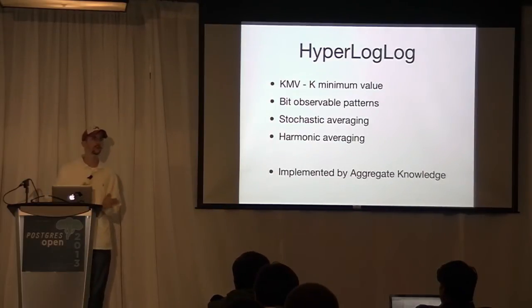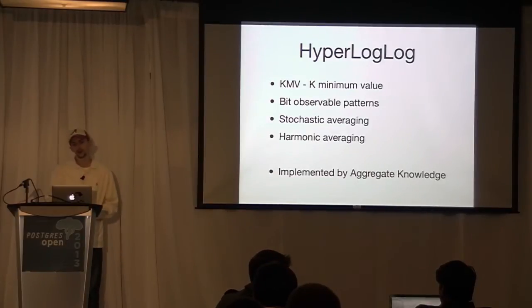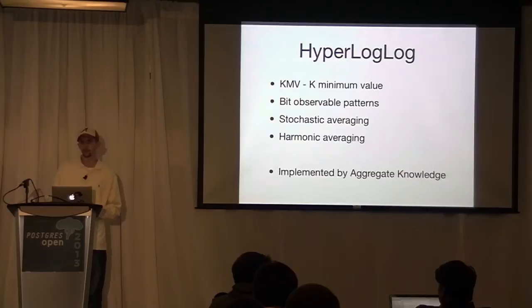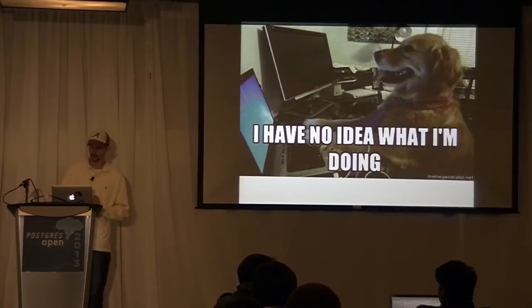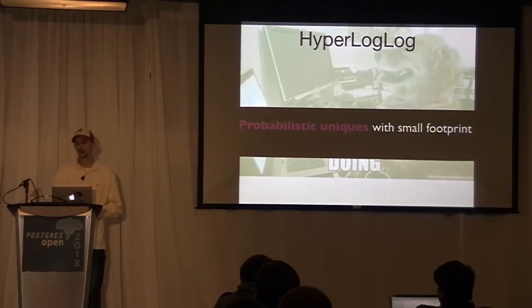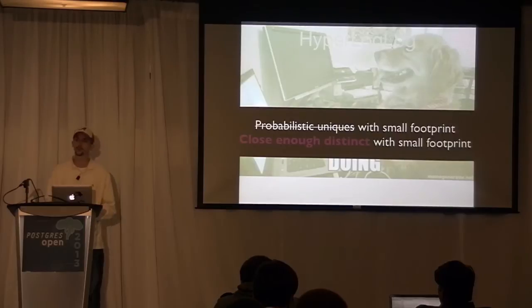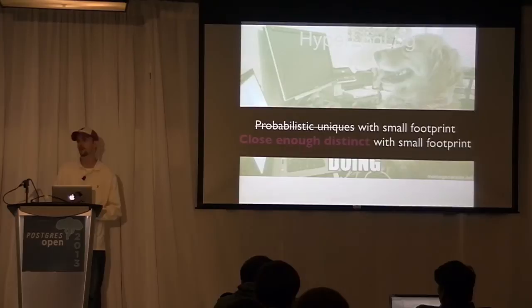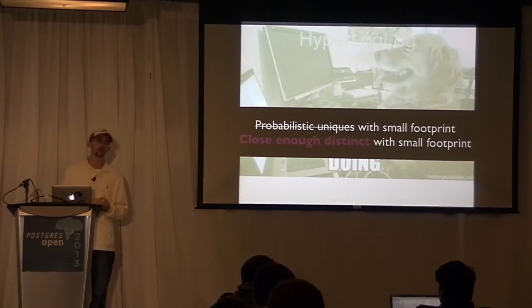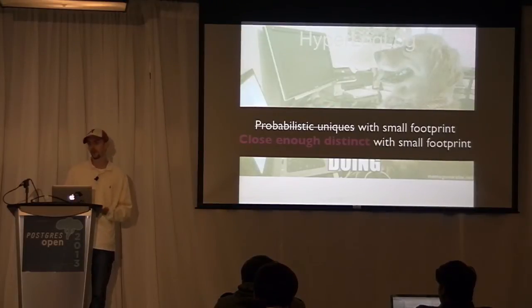So I read through the paper and I had this reaction — but I sat back and I really think of it as probabilistic uniques from a small footprint. To me, it's close enough. It really is quite close, and in really big data-making situations it's perfectly accurate enough that you can make a decision. I wouldn't use it for revenue reporting, but I would use it for making a decision about which thing is more effective.